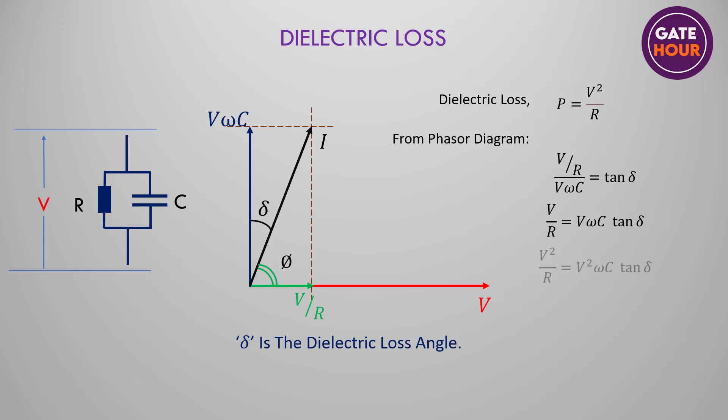If we multiply both sides by V, it will give V squared divided by R equals V squared omega C times tan delta. Since the value of resistance is huge, delta is very small, and tan delta can be approximated as delta. Therefore, dielectric loss is given by P equals V squared omega C times delta.